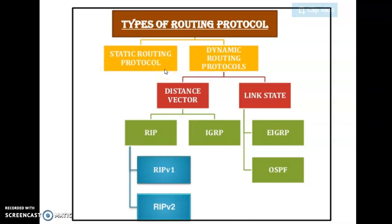There are two types of routing protocol. First is static routing protocol and second is dynamic routing protocol. In case of static routing protocol, the routing path selected by the router is static — where static means it does not change with respect to time. So in static routing protocol, the path is being fixed by the network administrator, and with respect to time, the path is not going to be changed.